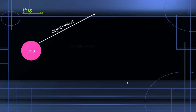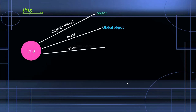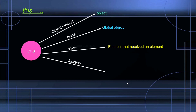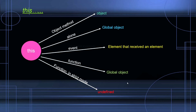When this is used with an object method, it will be referring to the owner object. When it is used alone, it will be referring to the global object. When it is used inside an event, it will be referring to the element on which the event is invoked. If it is used with a function, it will also be referring to the global object. When it is used with a function but in strict mode, the value of this will be undefined. But when we use this inside methods like apply, bind, or call, the value of this will be any object we specify.